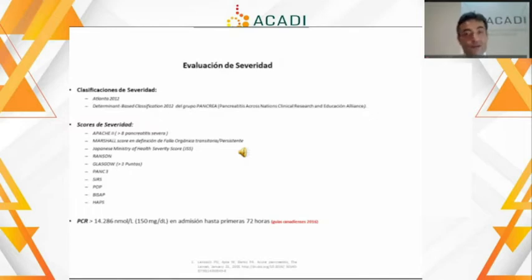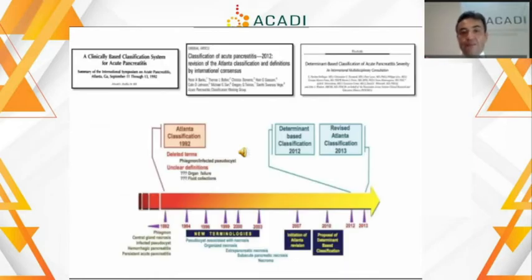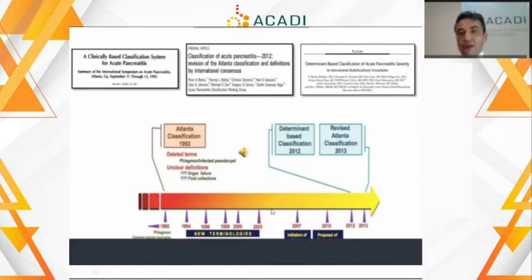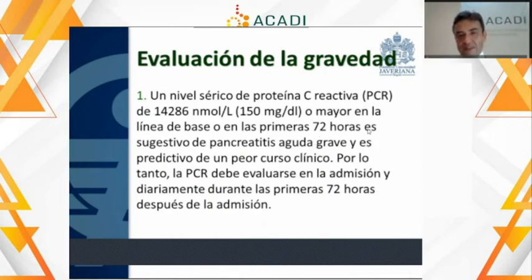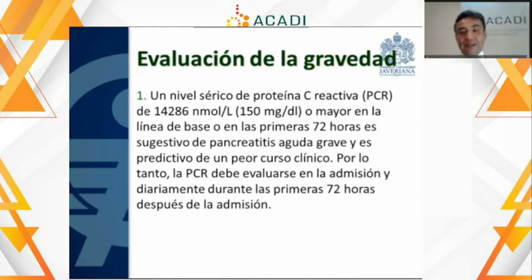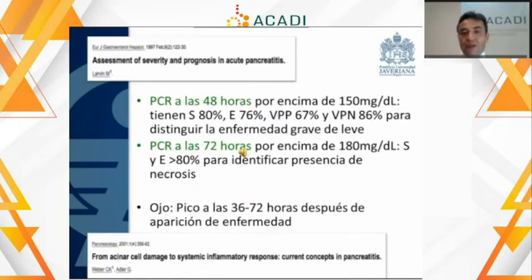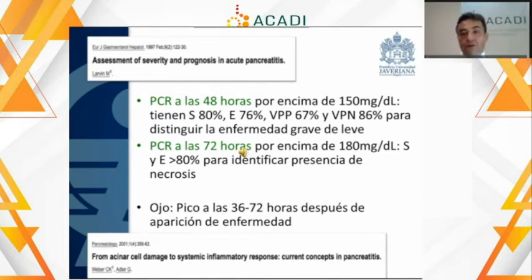Ya teniendo el paciente diagnosticado, debemos establecer la severidad de la enfermedad. Hay múltiples escalas y puntajes, pero básicamente desde 2013 usamos todos la misma clasificación de Atlanta modificada, que es fácil de entender y orienta el manejo del paciente. Otras pruebas como la elevación de la proteína C reactiva mayor de 150 son controvertidas; están recomendadas en algunas guías como la japonesa, pero no en la europea o americana.